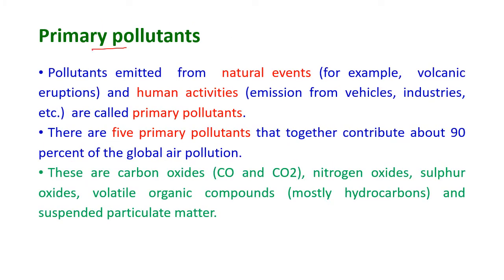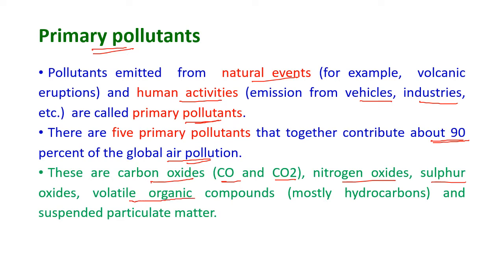Primary pollutants are pollutants emitted from natural events and human activities such as volcanic eruptions and emissions from vehicles and industries. There are five primary pollutants that together contribute about 90% of the global air pollution. These are carbon oxides (CO and CO₂), nitrogen oxides, sulfur oxides, volatile organic compounds which are mostly hydrocarbons, and suspended particulate matter.